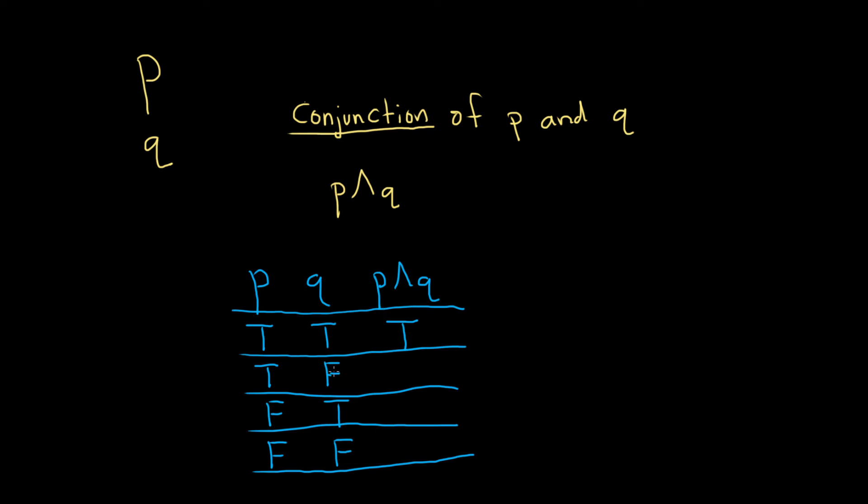So in this case here, q is false. So it is not true that they're both true. So this would be false. Likewise, in this third case here, p is false. So it is not true that they're both true. So it's false.